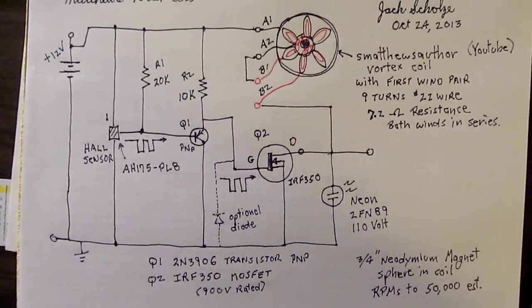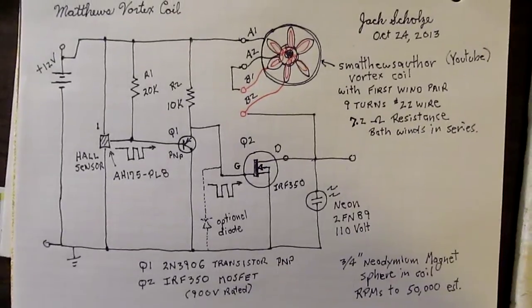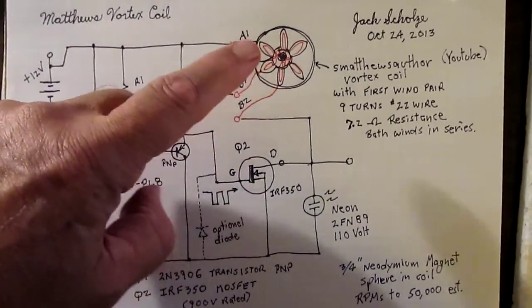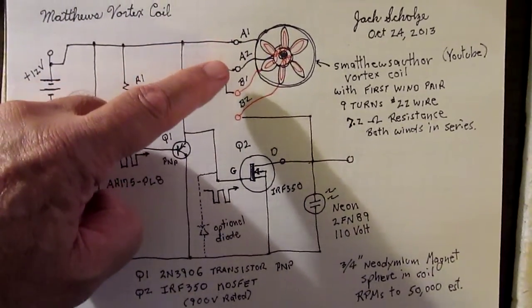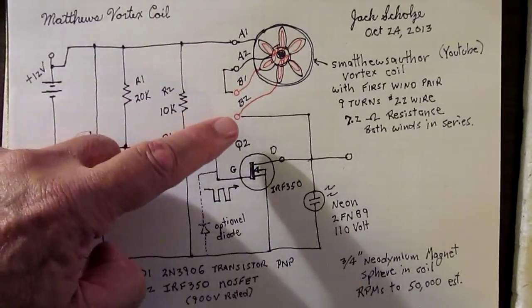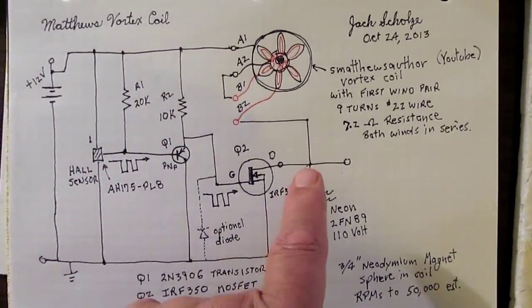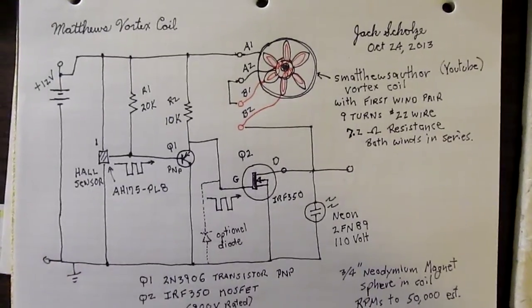It's quite robust and reliable. The windings in the coil are in series - about 7 ohms of series resistance off the drain of the MOSFET.